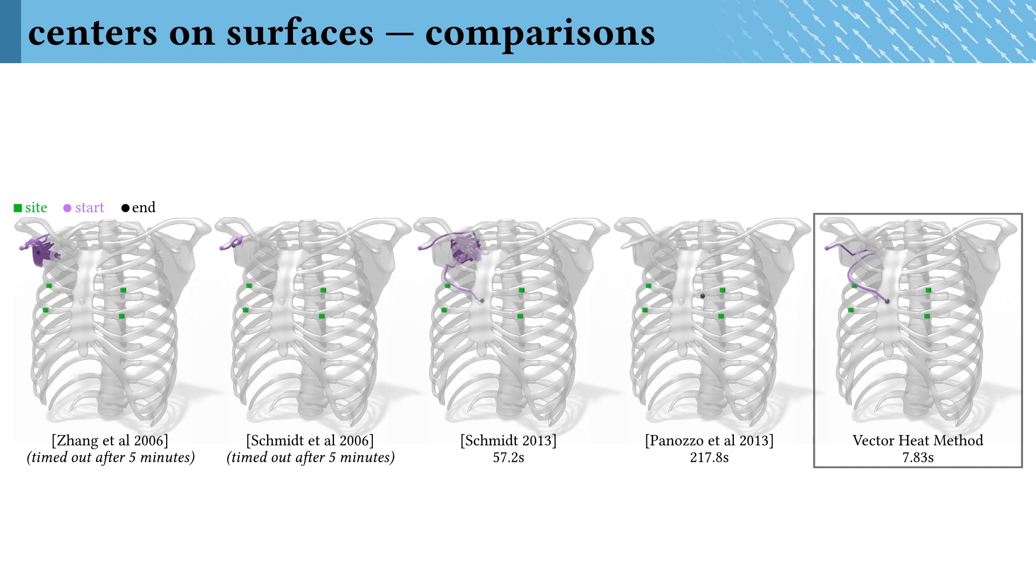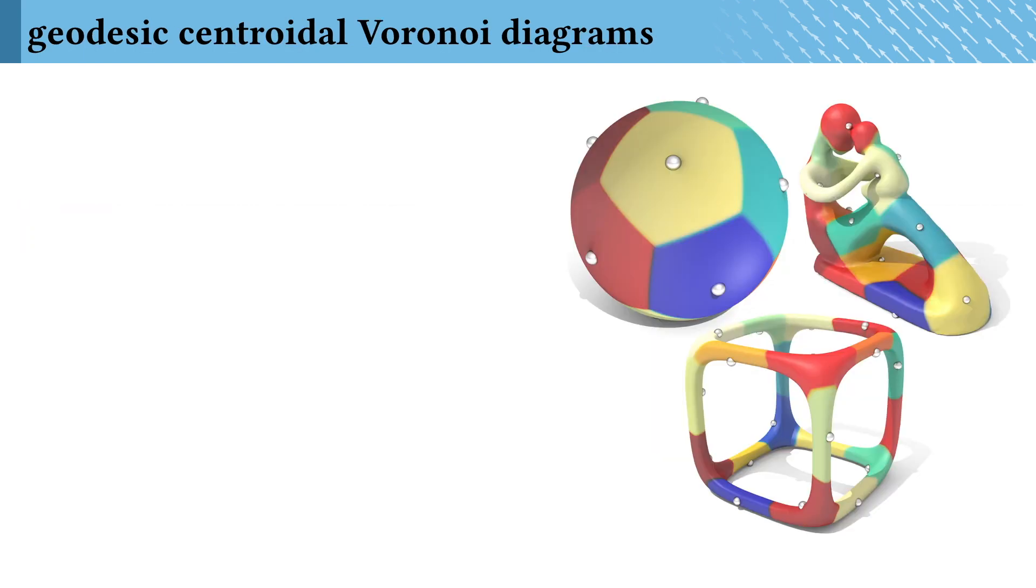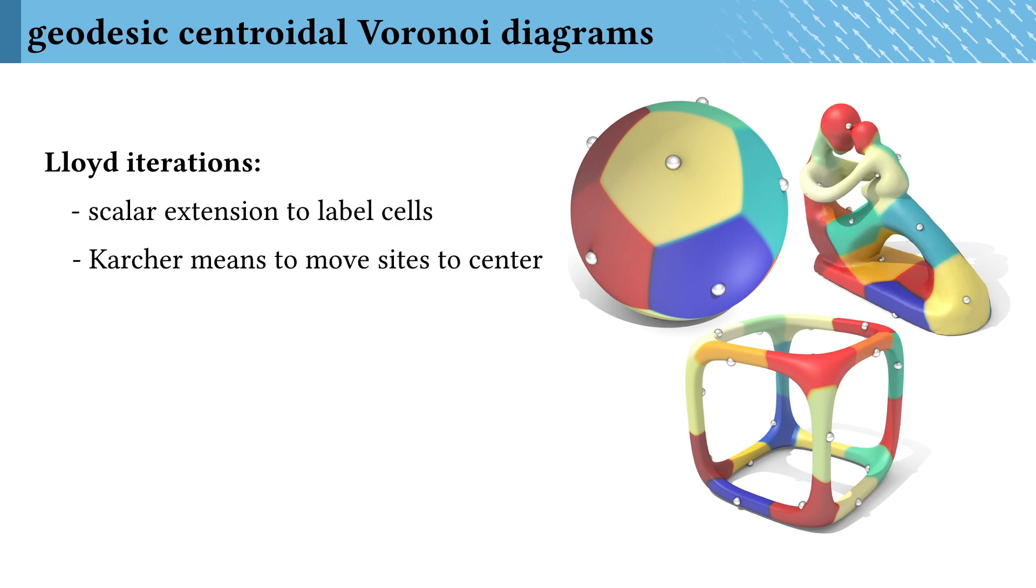Similar machinery allows the vector heat method to compute centroidal Voronoi diagrams. Here, the scalar extension labels our cells, and our averaging procedure finds the centers of those cells.